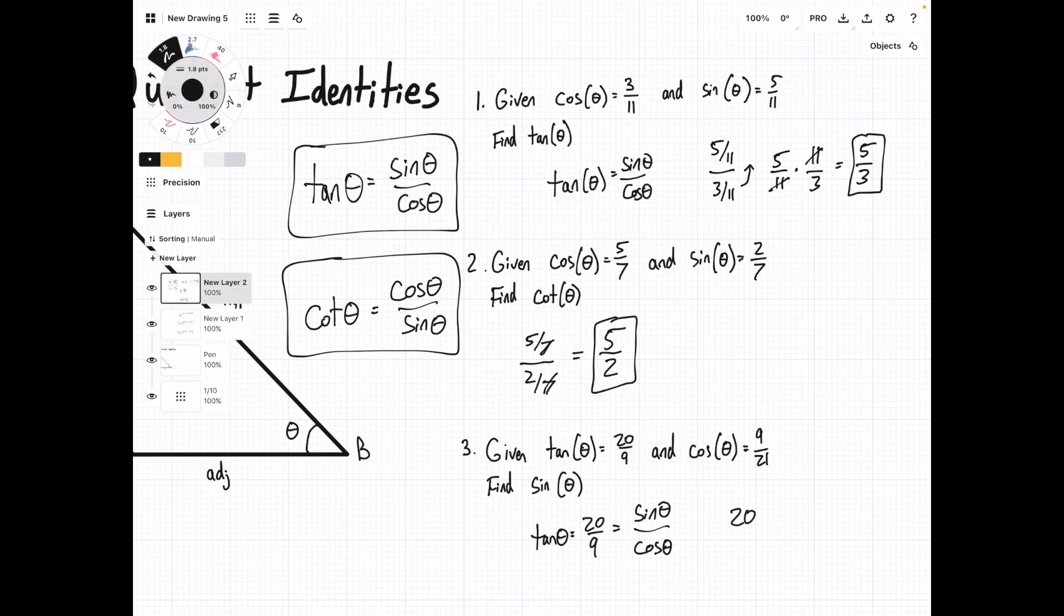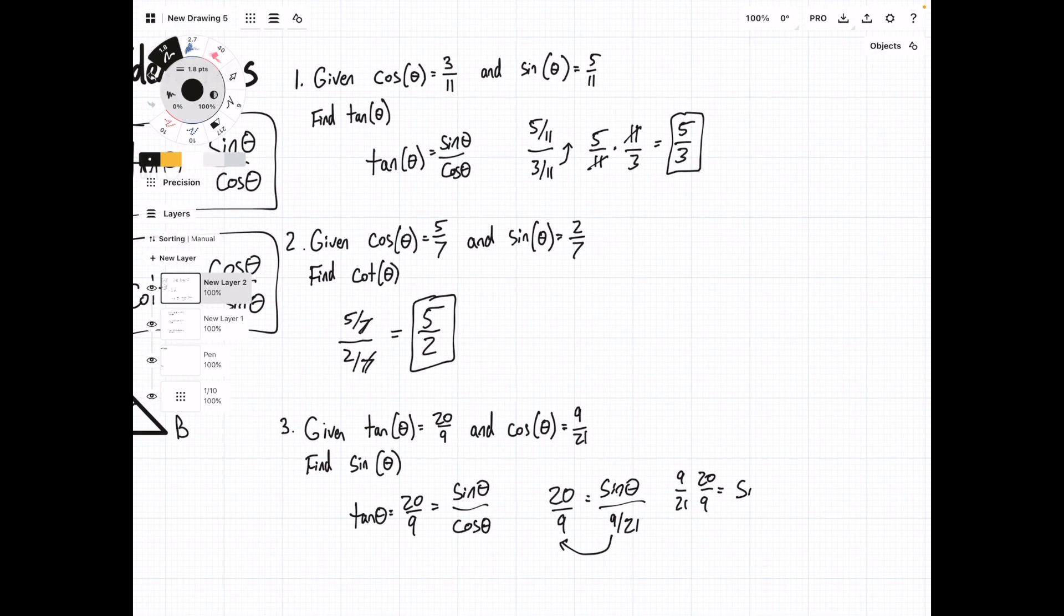Writing it out: 20/9 equals sin θ over 9/21. We can multiply this up: sin θ equals 20/9 times 9/21. The 9s cancel, so sin θ equals 20/21.